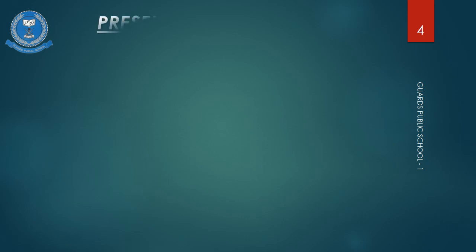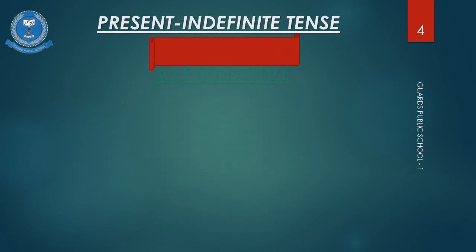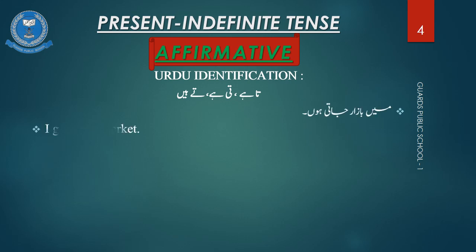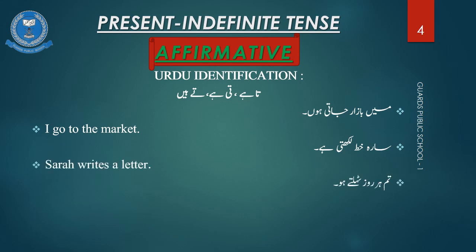Students, you can see in slide number 4 I have given some sentences. First you have to learn how to recognize the indefinite tense. For the translation of indefinite tense, you can see the Urdu identification: ta hai, ti hai, te hai. Now you can see in the Urdu sentences.